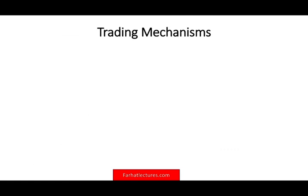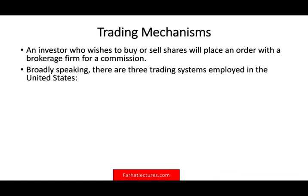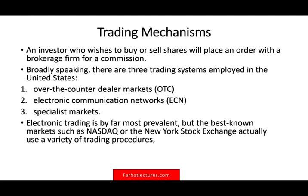Now let's look at the trading mechanism — how you buy and sell stocks. An investor places an order with their brokerage firm, usually via computer. Broadly, there are three trading systems used in the US: over-the-counter (OTC), electronic communication network (ECN), and the specialist market. Electronic trading is by far the most relevant. Best-known markets like NASDAQ and NYSE use a variety of trading procedures — NASDAQ uses electronic platforms while NYSE still uses the specialist market.